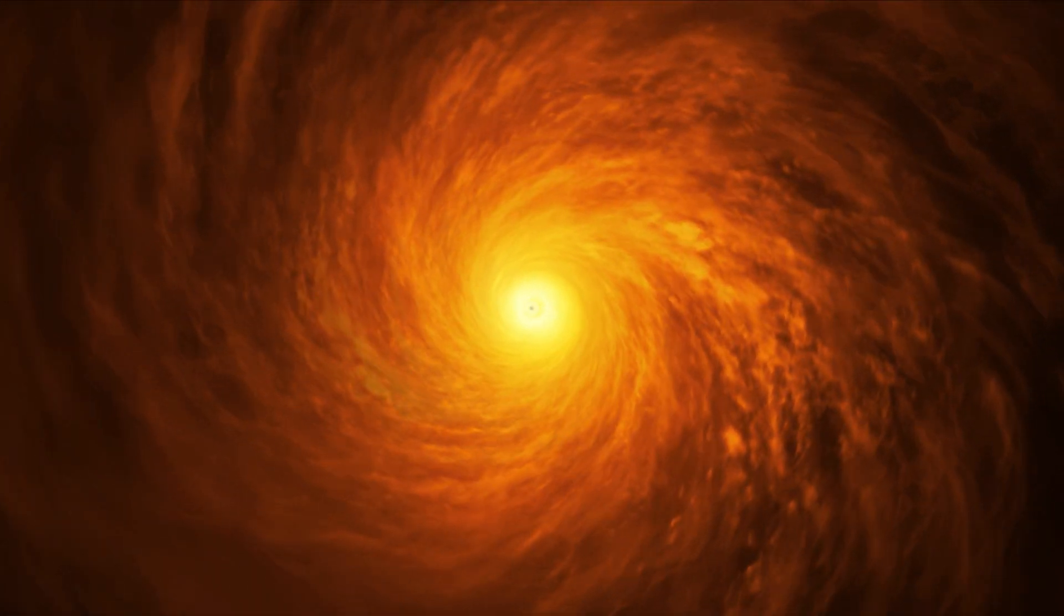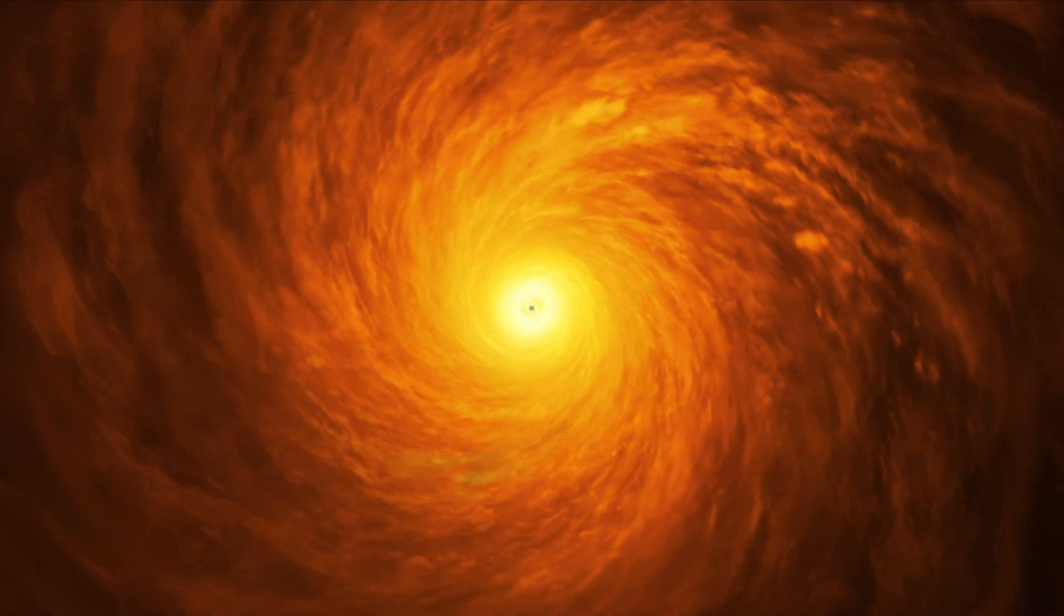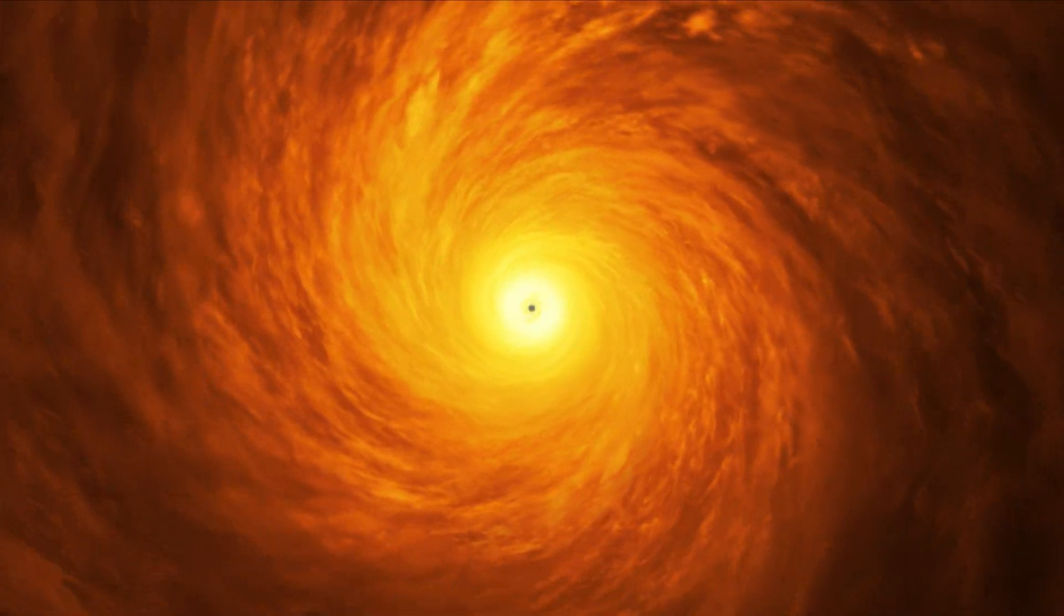How do stellar mass black holes form? Stellar mass black holes form when a massive star reaches the end of its life and implodes, collapsing in on itself.